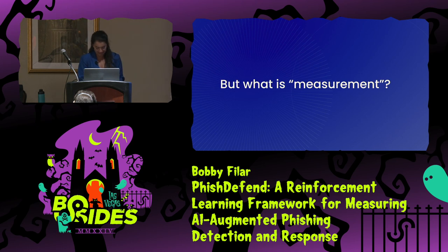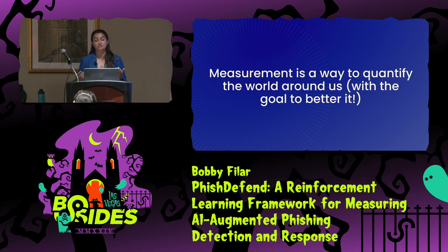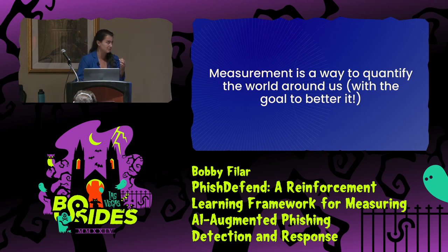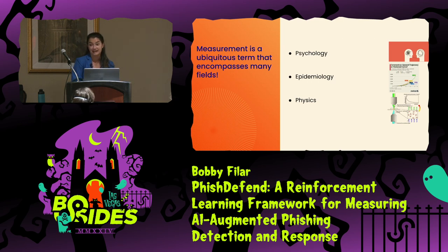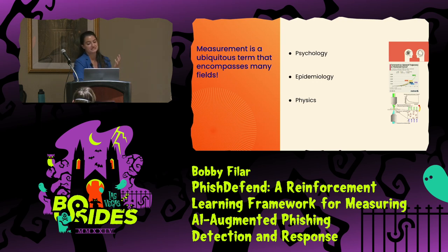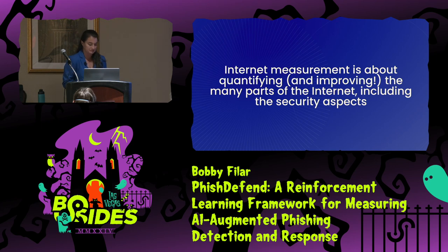Before I can get into some examples, I think it would behoove us to set the stage and talk about what measurement is. At a very broad level, measurement is a way to quantify the world around us with the goal to better it. The security field is actually fairly nascent — only around for two or three decades, which is still pretty new. There are other fields that have been using measurement at the core of their science for far longer. For example, folks who measure depression and cognitive well-being in adolescents, work on measuring COVID-19 spread, or measuring the polarization of light particles in physics. Measurement is prevalent all around us, and internet measurement specifically is about quantifying and improving the many parts of the internet, including the security aspects.